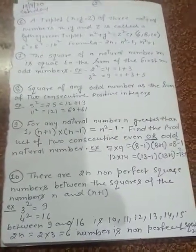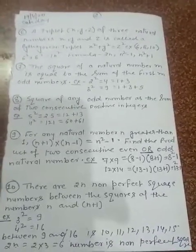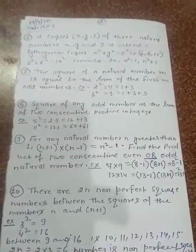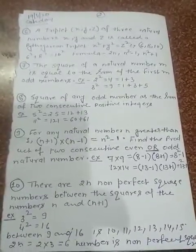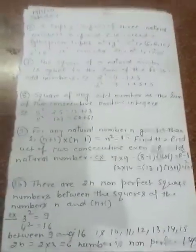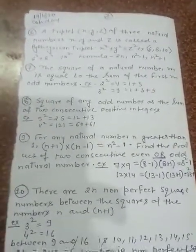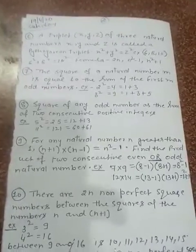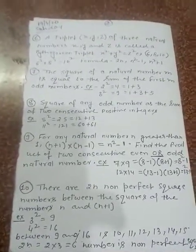Now, property number 10. There are 2n non-perfect square numbers between the square of the number n and n + 1. What do you mean by this property? Simple, we take n = 2, suppose n is 2, then n + 1 is 3. This is the number.